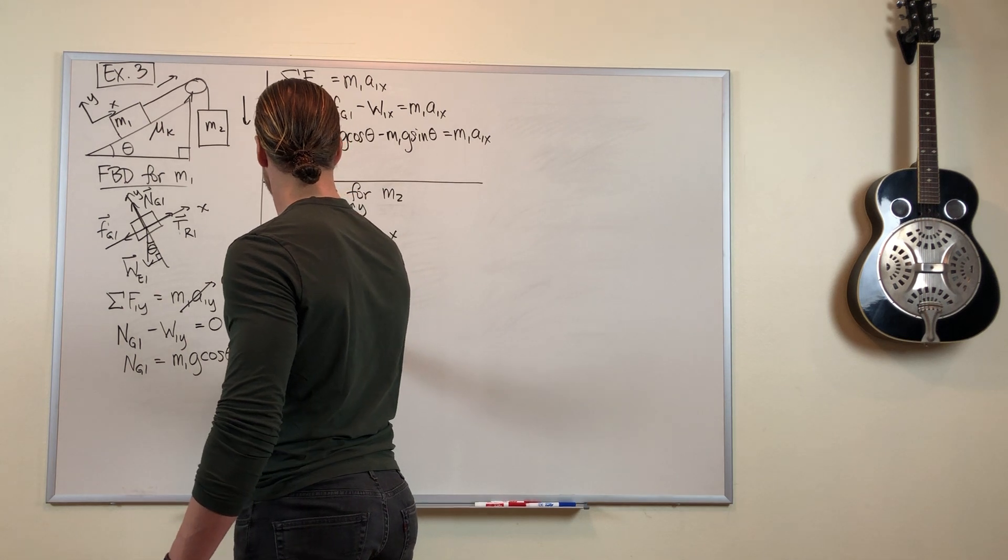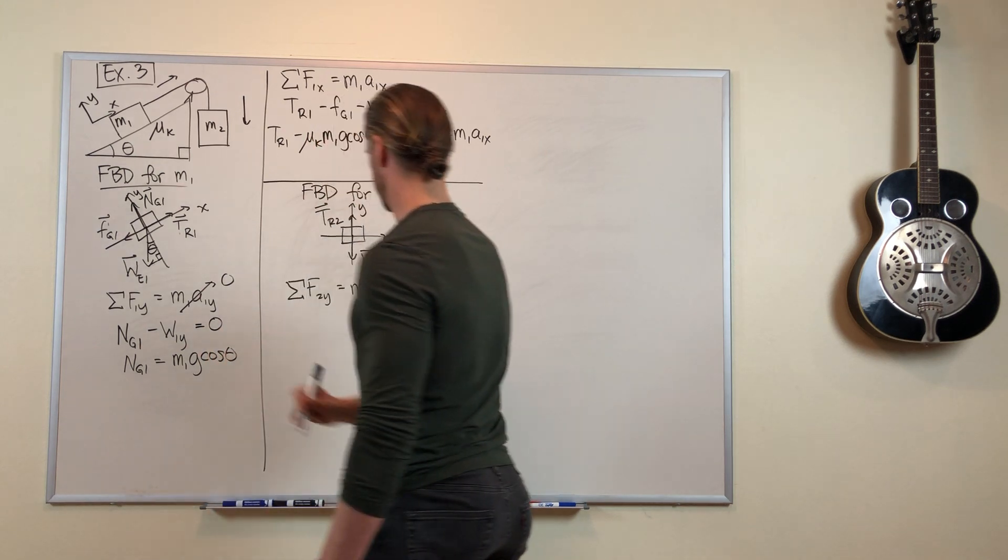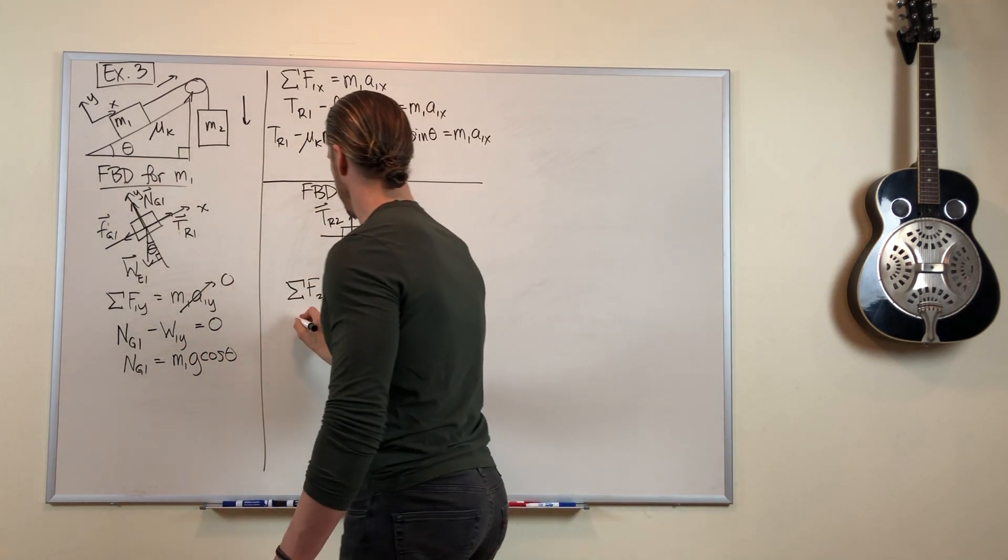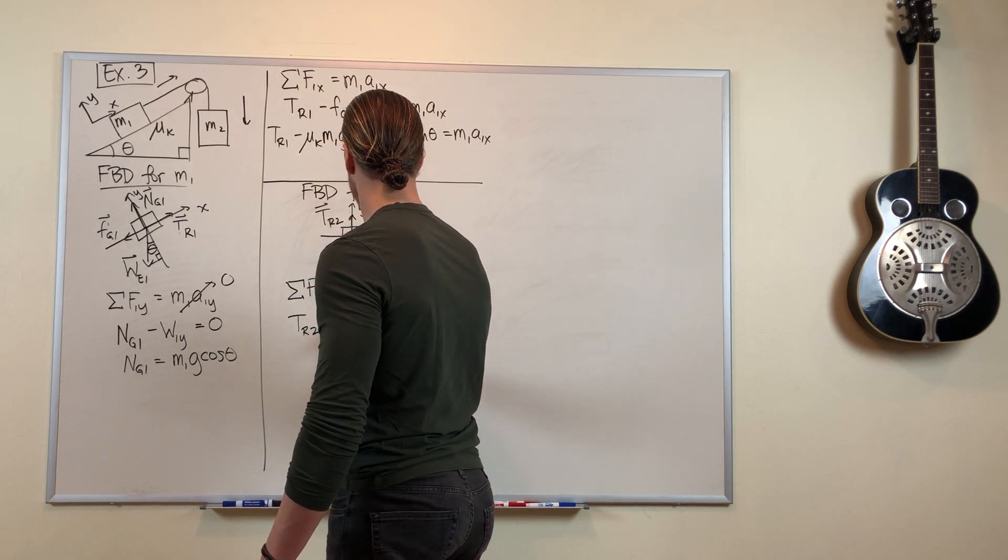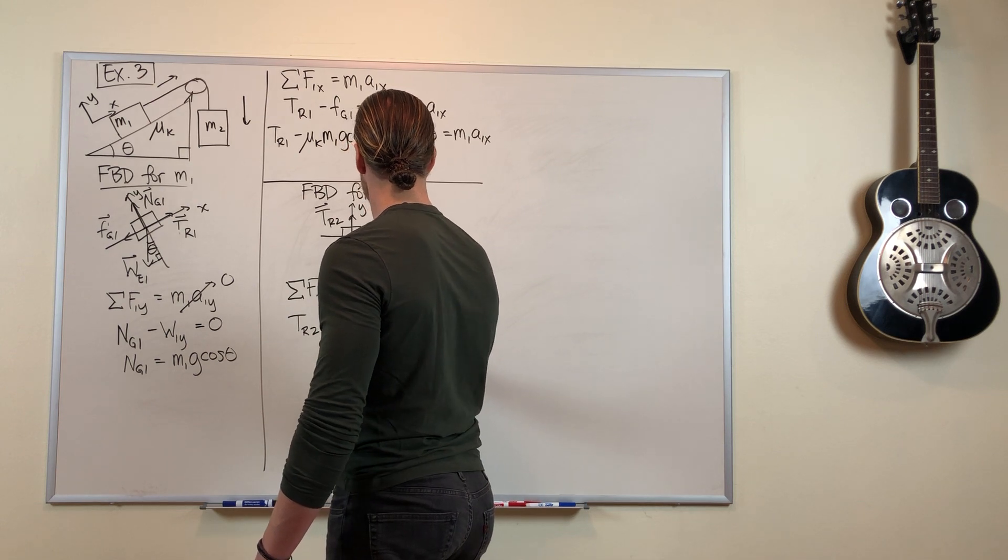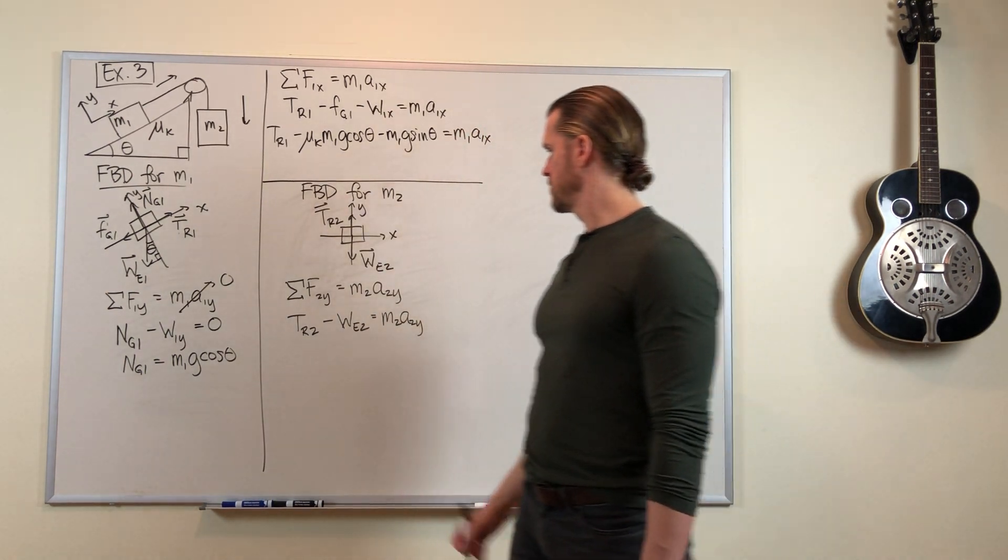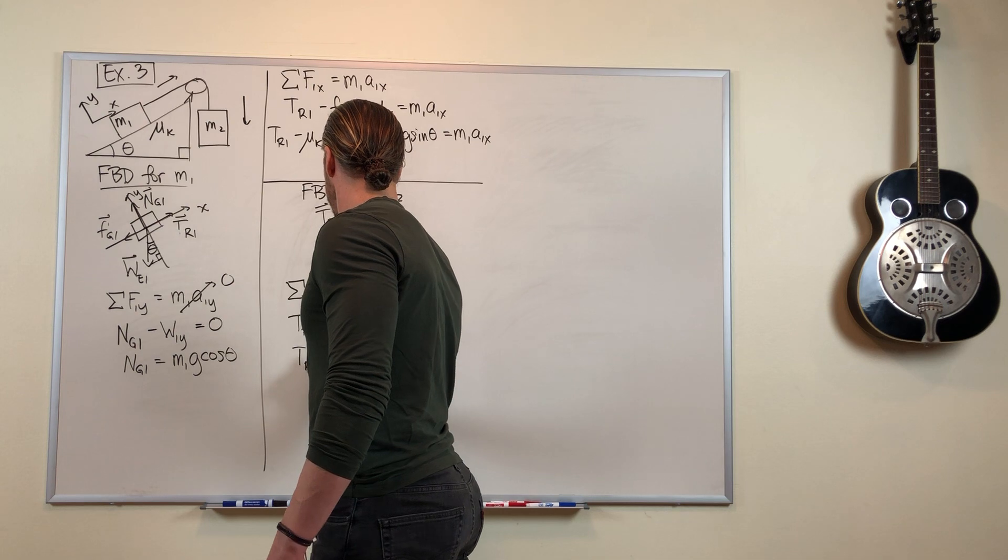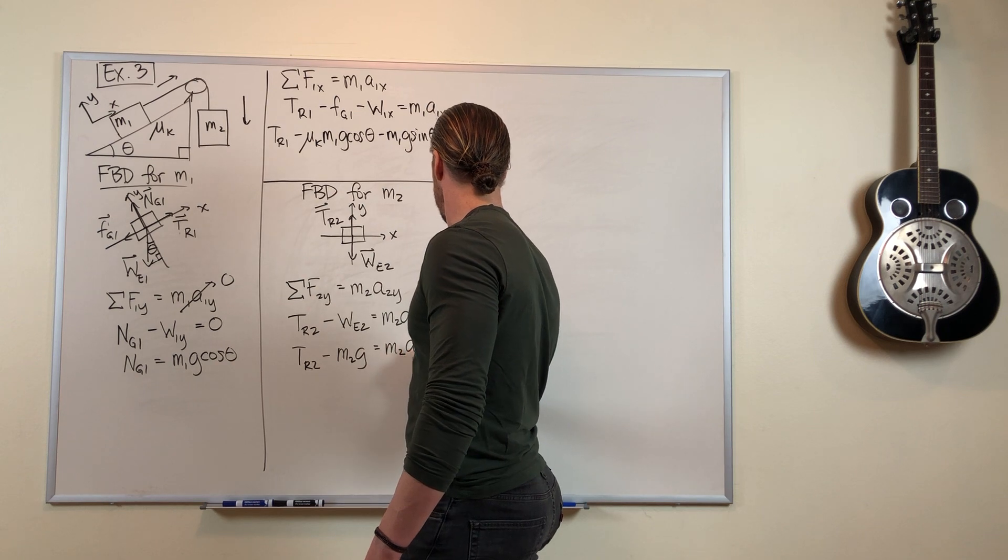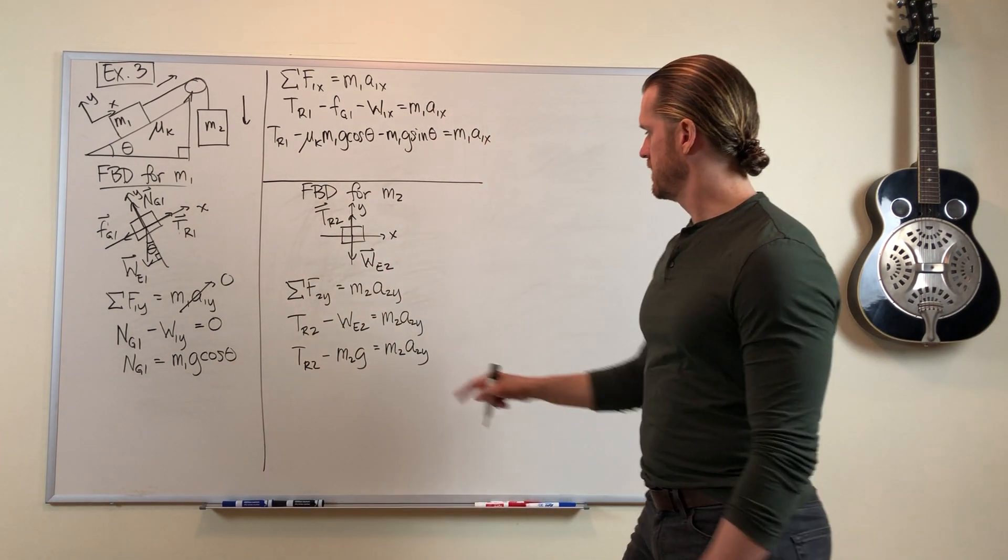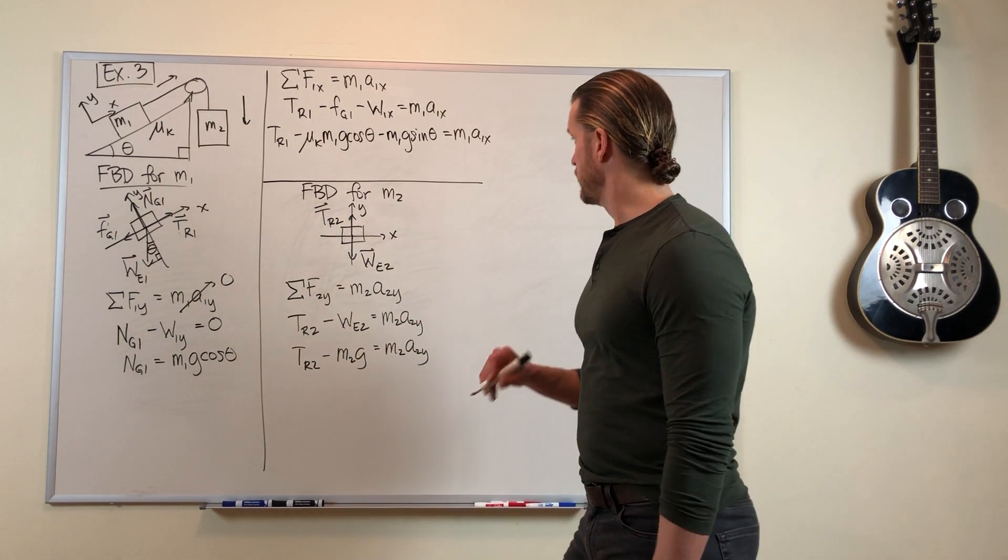So Newton's second law in the y-direction says tension force is positive, gravity force is negative. That equals m2a2y. We might as well substitute m2g for that gravity force. And once again, we are now left with an equation we can't solve because we don't know tension and we don't know acceleration.